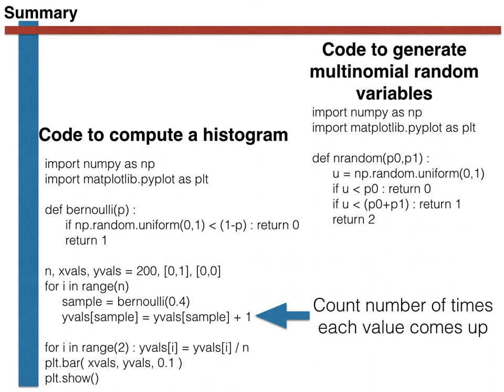The code shown here on the right hand side, meanwhile, shows how you can generate multinomial random variables. This code can be in a separate function or it can be embedded within the loop that generates the samples and computes the histogram. Good luck with the next task!